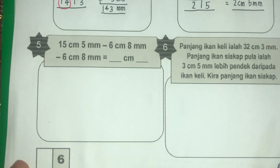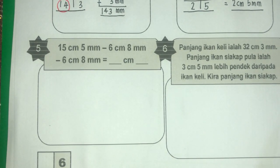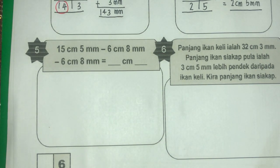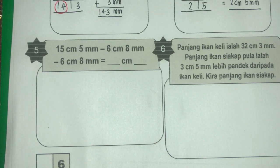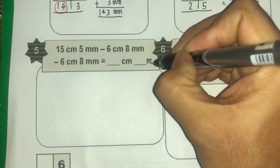Soalan ke-5: 15 cm 5 mm tolak 6 cm 8 mm tolak 6 cm 8 mm. Soalan ni ada 3 nilai ukuran panjang. Bila ada 3, kita tak boleh tolak sekaligus. Kita kena buat beransuran-ansur, sikit-sikit. Macam kita belajar tolak dalam bentuk lazim biasa kan, kita kena selesaikan secara berperingkat.